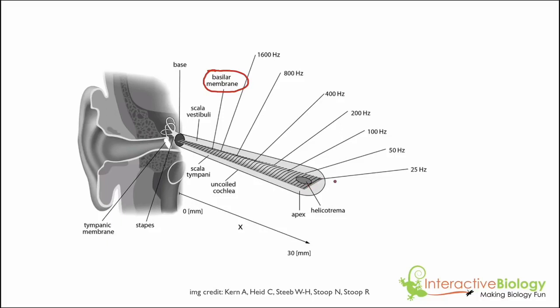We have a number of different frequencies associated with these different sections. Here we have 25 hertz, which is a low frequency. As we come over to the thinner section, we have higher frequencies up to 1600 hertz, and it goes all the way up to about 20 kilohertz. So we go as low as 25 hertz and as high as 20 kilohertz.